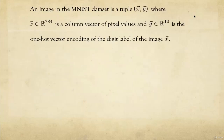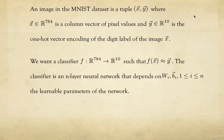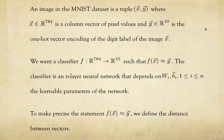Recall from the first lecture we talked about the image dataset where every image is a tuple, where x is a flattened column vector of pixel values and y is the corresponding one-hot vector encoding of that image. We want a classifier or a function that maps the raw pixel values to the label space. We want the prediction f to be approximately the same as the label vector y, and this will be an n-layer neural network depending on learnable parameters wi and bi.